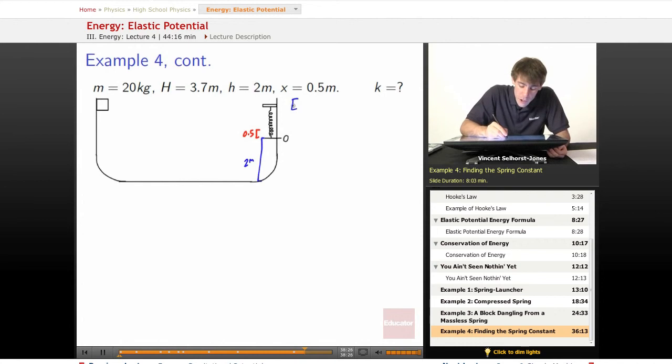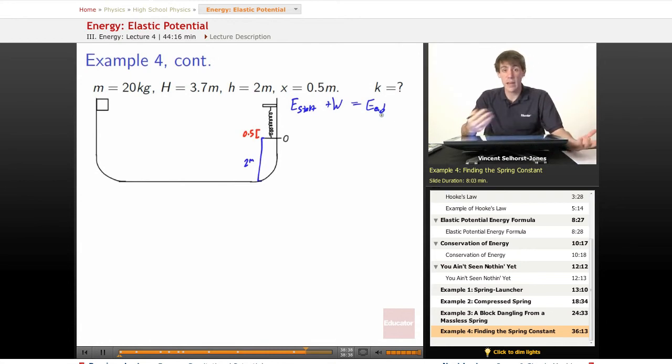So we know that energy at the start plus the work involved is equal to the energy at the end. So what's the work involved? We're on a frictionless halfpipe. It's a massless spring. Is there any air resistance? No. We can assume that there's no air resistance because it's not moving that fast and it's never mentioned.